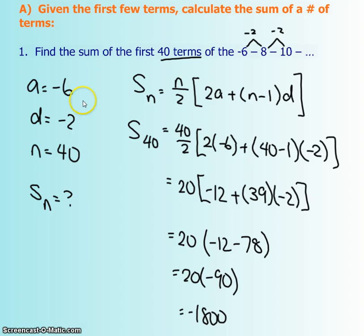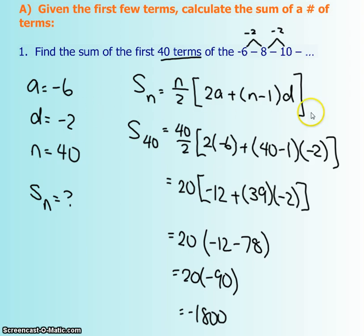I'm going to make a list of all the given information and what I'm looking for. What I was given is the first term, which is negative 6, the common difference, which is negative 2, and they told me they want the sum of the first 40 terms. I could just use my calculator and take negative 6 plus negative 8 plus negative 10 and keep adding up until 40 terms, but that's going to take too long. So this formula is going to help out quite a bit — we're just going to sub in all our numbers. When n is 40, I sub in all my 40s, making sure I'm not still writing Sn, then sub in what A is and what D is.